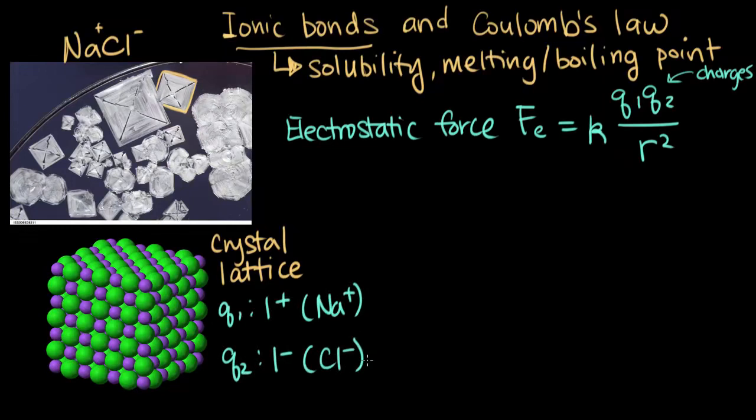We could also just switch those two. We could say chloride is Q1 and sodium is Q2, and that wouldn't change what we get from this equation. R squared here is the distance between the ions, and we usually approximate it as the sum of the ionic radii for the two ions we're looking at.